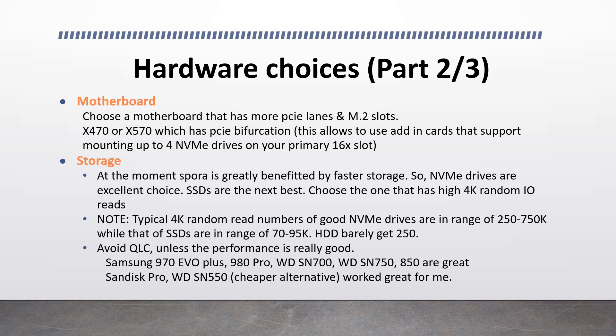Moving on to the next hardware choice: storage. This is also the most controversial and confusing choice for RV mining. The SPORA hash rate is greatly benefited by faster storage, and as mentioned, it is mainly impacted by 4K random reads. NVMe drives are an excellent choice for this. SSDs are the next best choice. Typical 4K random read numbers for good NVMe drives are in the range of 250,000 to 750,000 IOPS, while SSDs are in the range of 70,000 to 95,000. In comparison, HDDs barely get 250 — a very paltry number. You can imagine how much performance is impacted by using faster storage.